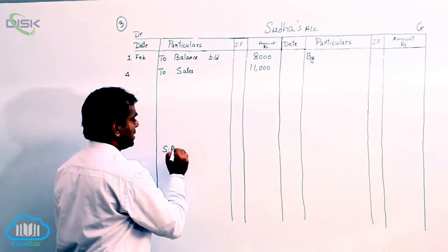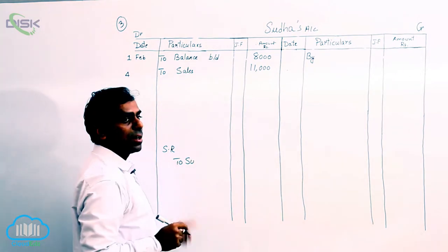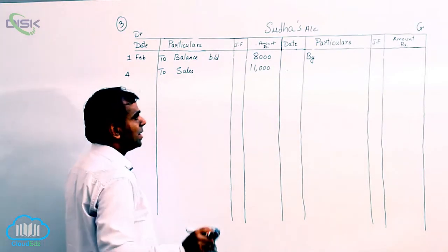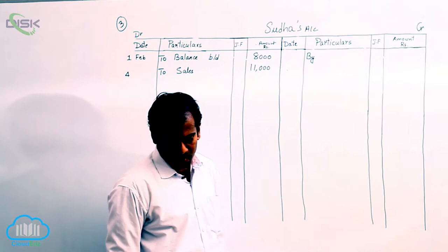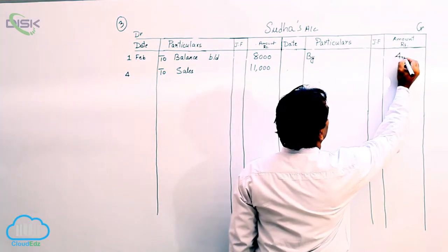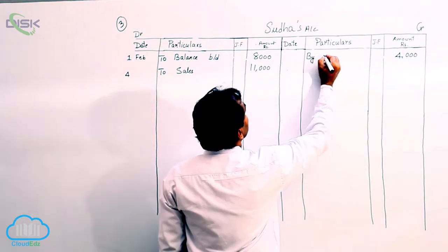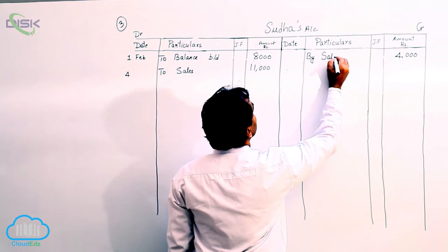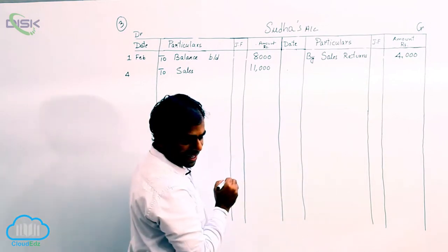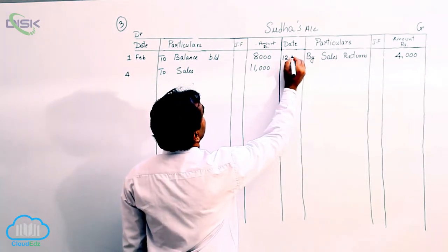So we will debit sales returns and we have to credit Sudha's account because Sudha is the giver here. So based on this journal entry, we credit Sudha's account with 4000 rupees. So we are writing 4000 on the credit side and by is a constant, and the reason is sales returns. So the date being 12th, 12th February.